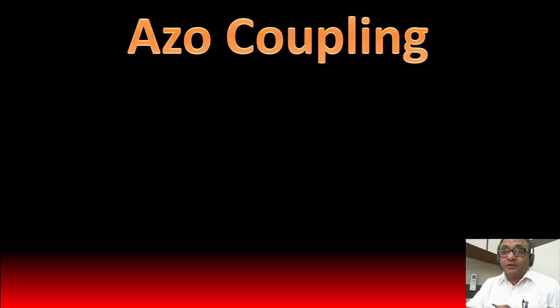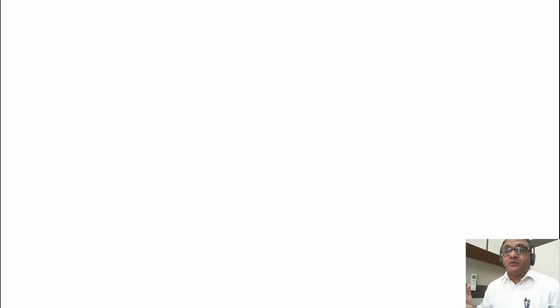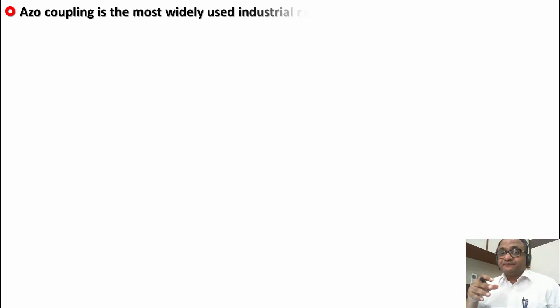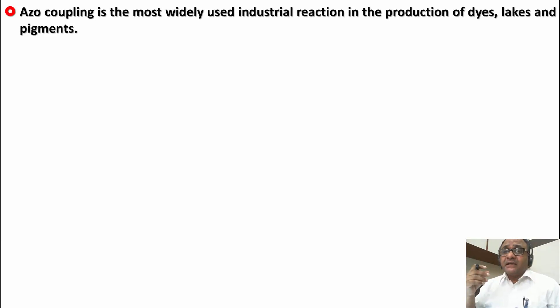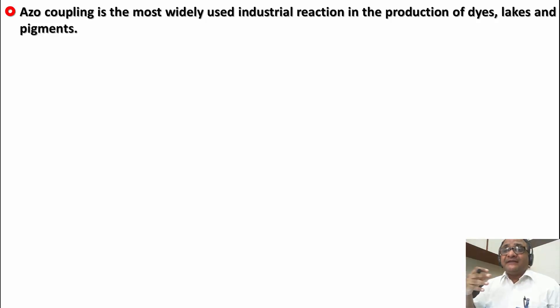Hello and welcome to this video on azo coupling. In this particular video, we are going to talk about what is azo coupling and in which particular compound azo coupling generally occurs. Azo coupling is the most used industrial reaction in preparing colored dyes and pigments for paints. Azo coupling generally occurs when aromatic diazonium ions behave as electrophiles and they couple with activated aromatic compounds like anilines, phenols, naphthols, etc.